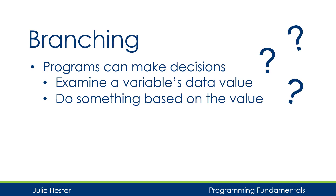First, let's talk about what branching is. Without branching, our programs start at the beginning and each line of code is executed one after another from top to bottom. But sometimes we want to look at a value and decide to do something based on that data value. That's where branching comes in — we're going to allow our programs to make decisions by examining a variable's data value. If it meets a condition, then we'll do something, or we may skip that item.